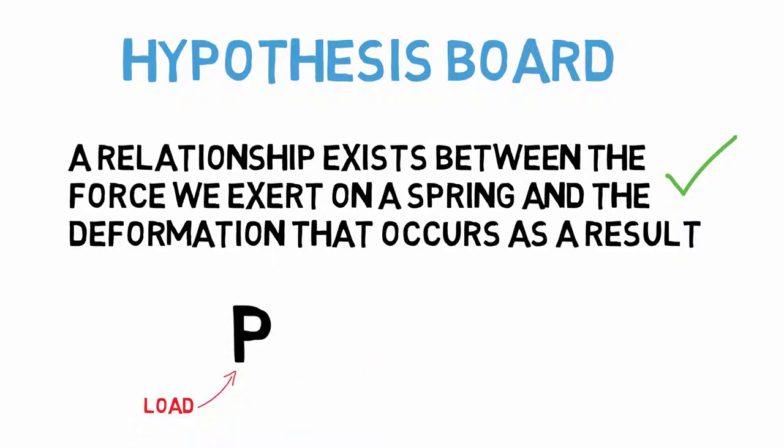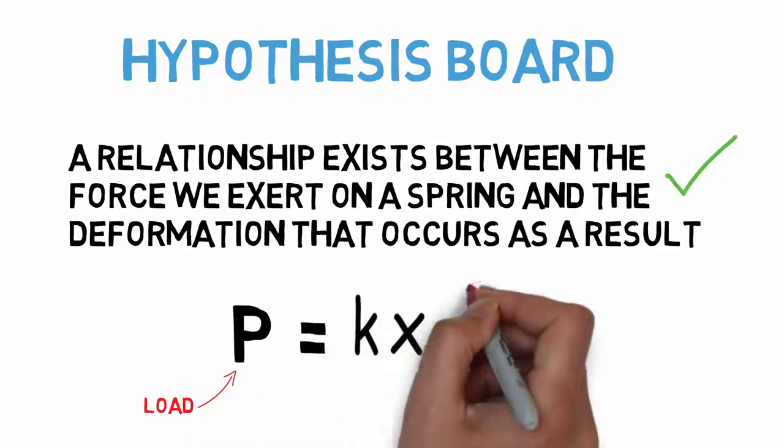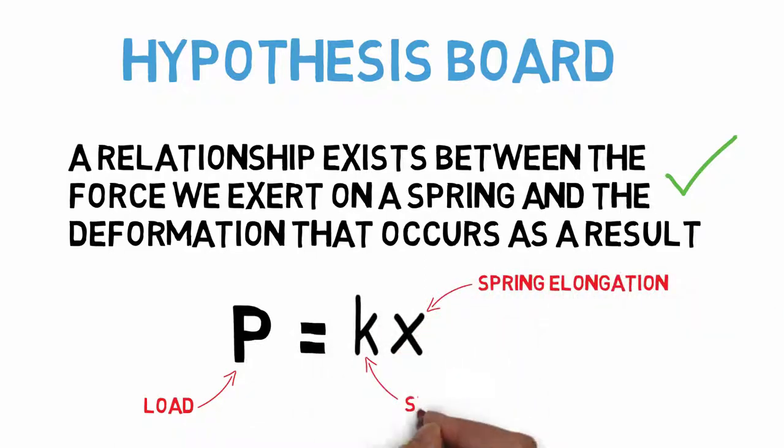p, the load, is equal to k times x, the spring elongation. And here, k is the spring constant, a value describing the stiffness of a spring.